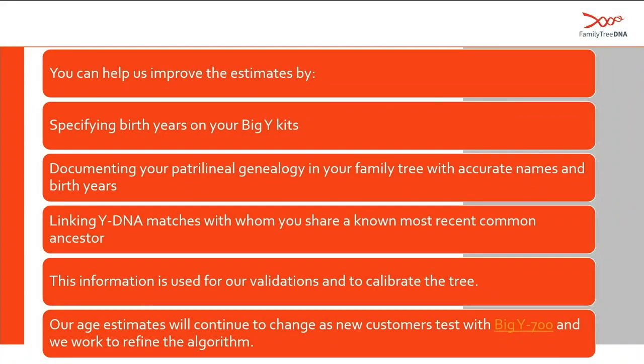Customers can help us improve these SNP estimates by specifying the birth year on your Big Y kits and documenting your paternal genealogy. We use all this information to calibrate the tree for validation. If customers want us to refine the dates, we ask them to update their accounts, and when we're getting ready to run an update, we use that information to calibrate the tree and provide decent SNP age estimates.